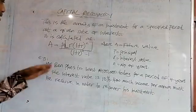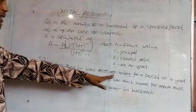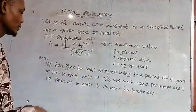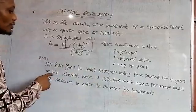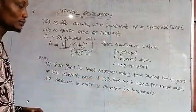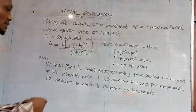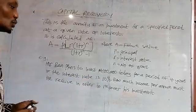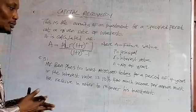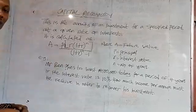For example, Mr. Ben plans to invest $400,000 today for a period of 4 years. If the interest rate is 10% per annum, how much income per annum must he receive in order to recover his investment? This is the formula we are going to apply.